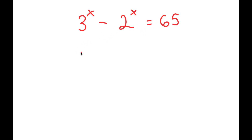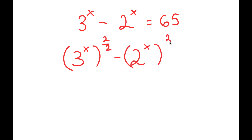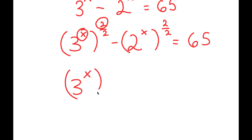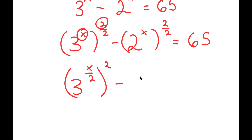To solve this, I'm first going to take the power of 2 over 2 on both sides. So I get 3 to the power of x to the power of 2 over 2, minus 2 to the power of x to the power of 2 over 2, is equal to 65. The power of 2 over 2 is the same as the power of 1, so this isn't doing any major changes. I then switch the places of x and 2, so I get 3 to the power of x over 2, to the power of 2, minus 2 to the power of x over 2, to the power of 2, is equal to 65.